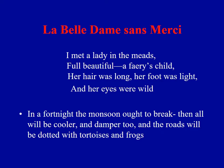Similarly, E.M. Forster, in his book The Hill of Devi, a travelogue, writes: 'In a fortnight the monsoons are to break, then all will be cooler and damp too, and the roads will be dotted with tortoises and frogs.' This is description — after heavy rain, frogs and tortoises come out on the roads and are visible from a distance as dots. This is also a very good example of imagery and descriptive skill.